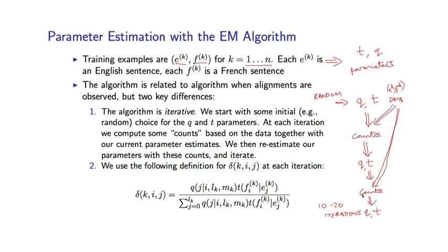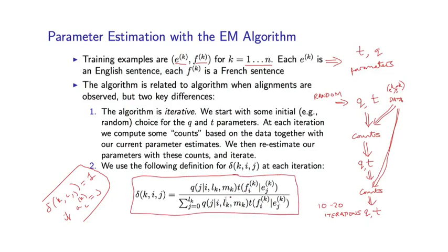And the only thing that's really going to change in how these counts are calculated is that, remember our data doesn't include alignment variables. So instead, we're going to use our Q and T parameters to actually calculate these deltas. So remember, we had delta_k,i,j is equal to 1 if a_k,i is equal to j. Okay. So these were indicator functions making use of the alignment variables we had.